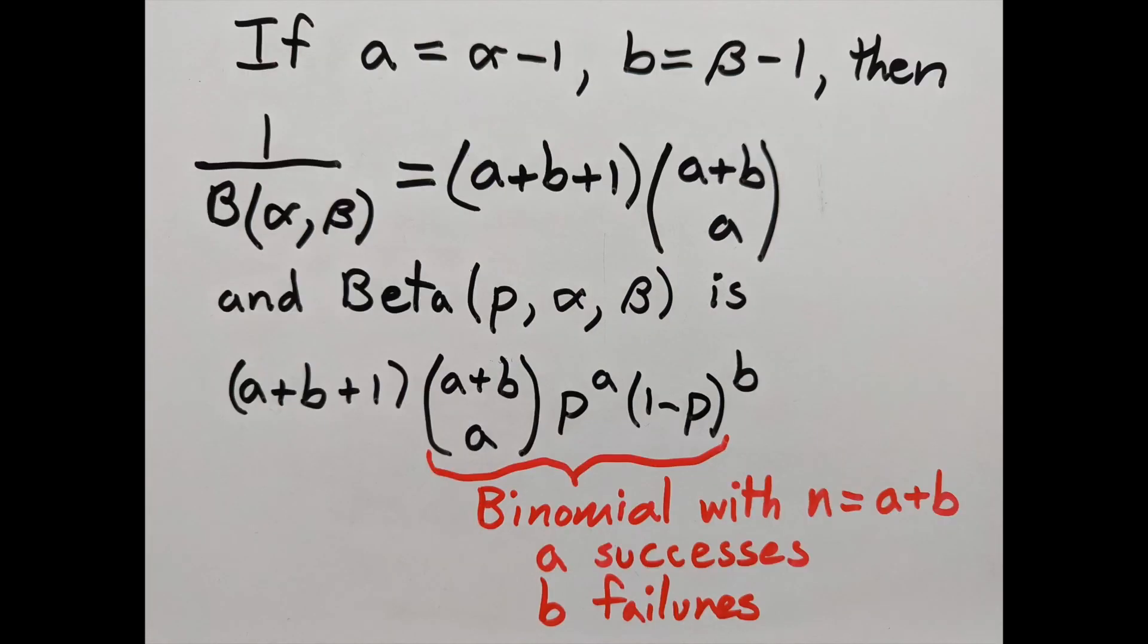Finally, a word about the constants. Now because gamma of n is n minus 1 factorial, and beta is defined with an integral with alpha minus 1 and beta minus 1, it's easy to make fence post errors. So you have to watch out for that.